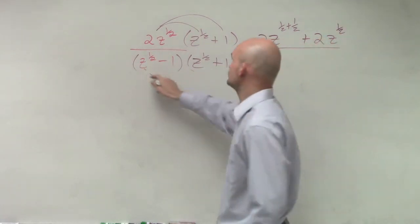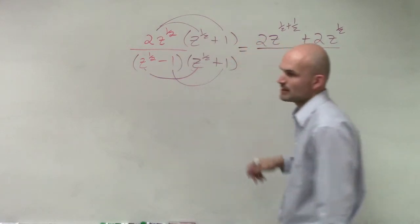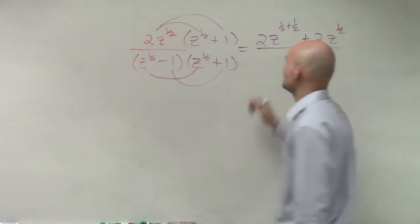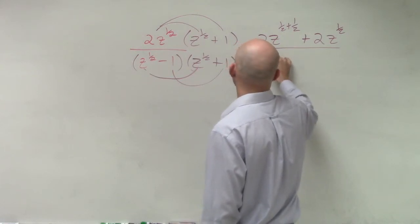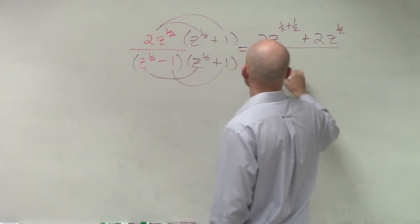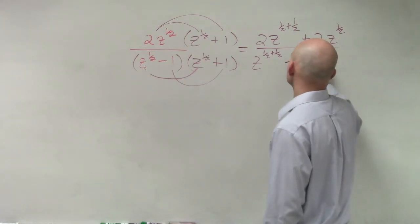this is a difference of two squares, so I only need to make sure I multiply my first and my last two terms. So z to the 1 half times z to the 1 half is going to be z to the 1 half plus 1 half, and then minus 1.